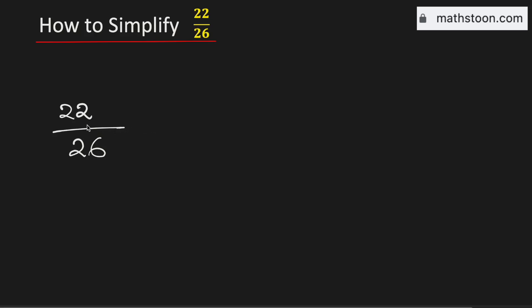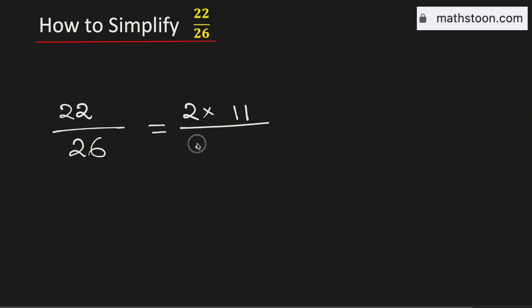In this video we will simplify the fraction 22 over 26 in its simplest form. We can write 22 as 2 times 11 and 26 as 2 times 13.